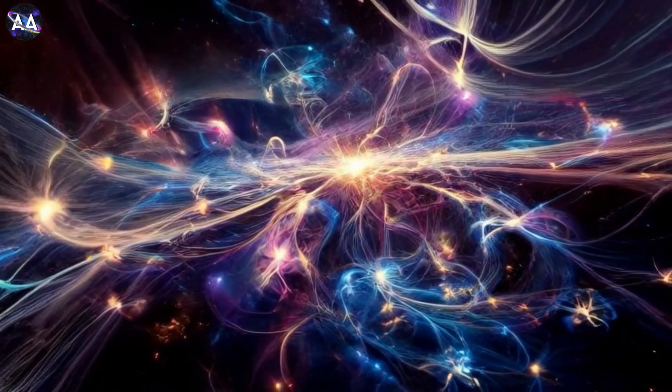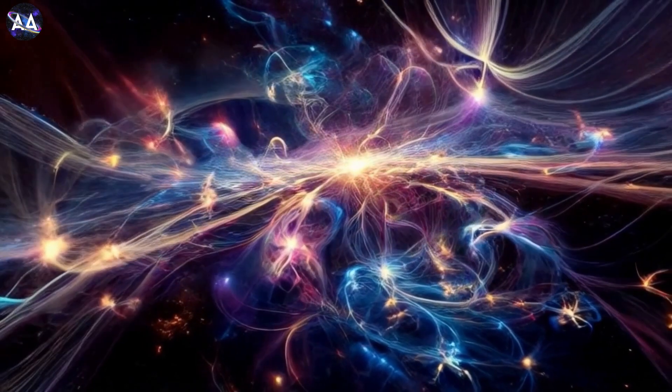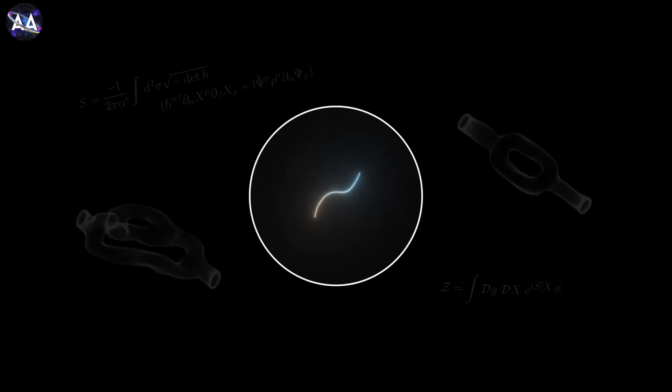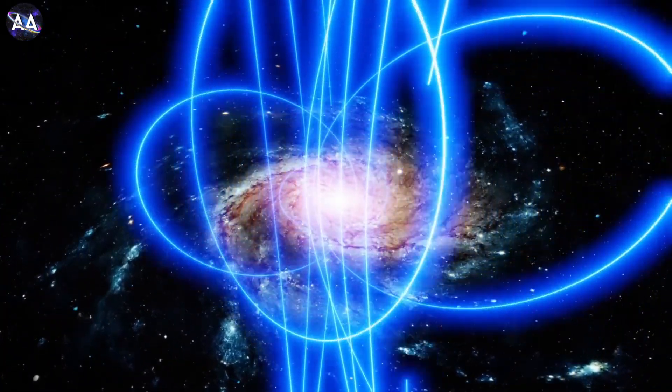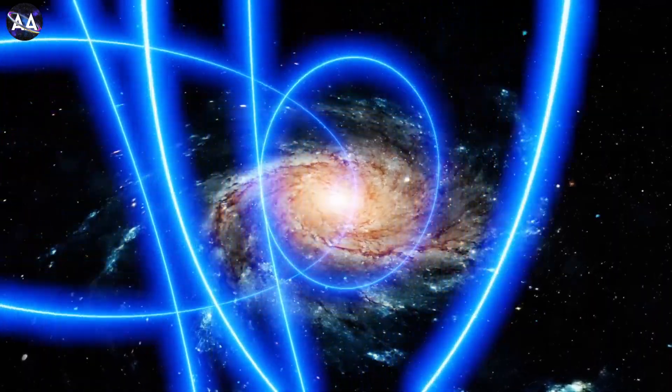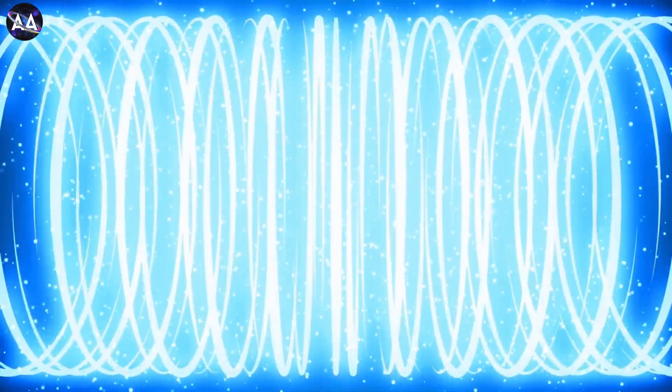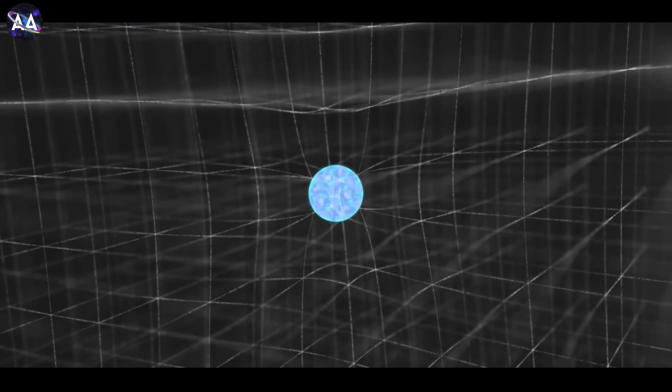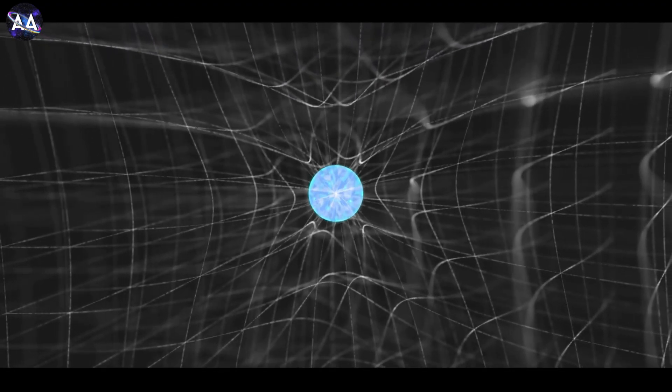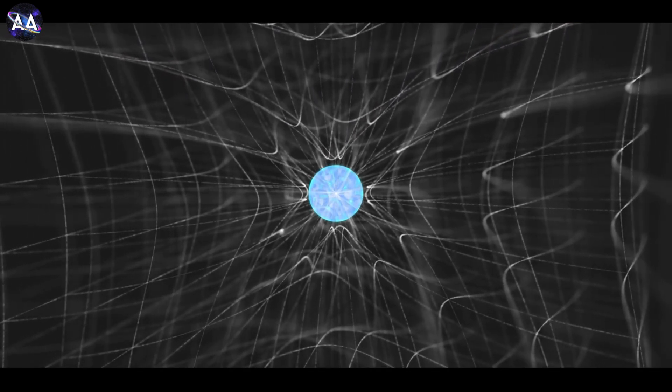Enter string theory, a groundbreaking idea that emerged in the late 20th century. It suggests that the fundamental building blocks of the universe aren't point-like particles, but tiny, vibrating strings. Think of them as the strings of a cosmic violin, with each vibration producing a different particle, like electrons, quarks, or photons. String theory does something remarkable. It naturally combines quantum mechanics and gravity. In this framework, gravity isn't a mystery. It's just the result of a string vibrating in a specific way.